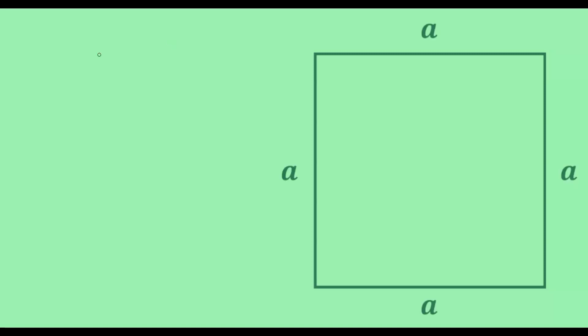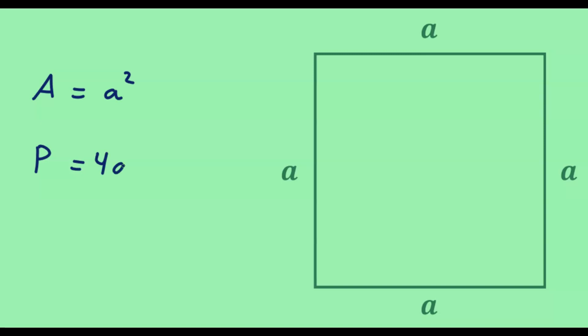Then, in this case, the area of the square is given by a squared, and the perimeter of the square is given by four times a.